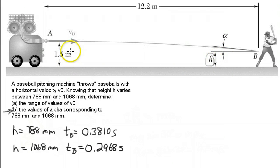What we know from part A is that if the height is 788 millimeters, then the time it takes is 0.3810 seconds. If the height is 1068 millimeters, the time is 0.2968 seconds.